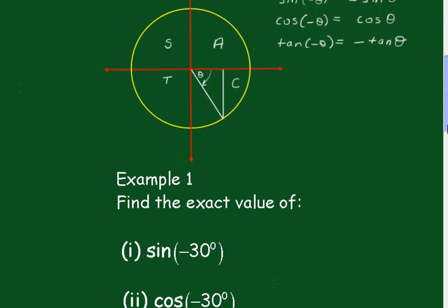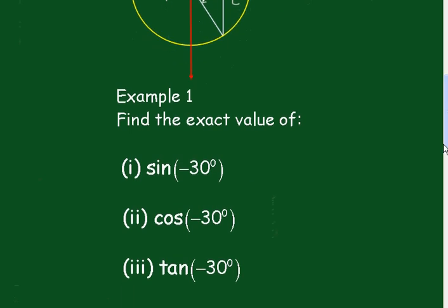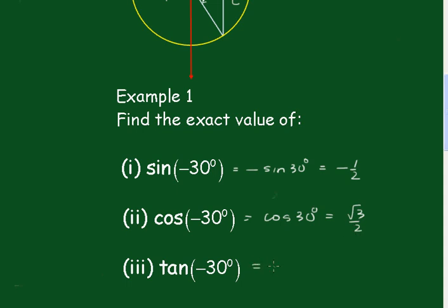So let's do these few examples. This is going to be minus the sine of 30 degrees, which is equal to minus a half. This is equal to the cos of theta, which equals root 3 over 2. And of course the tan of minus theta is minus the tan of theta, which is minus 1 over root 3.